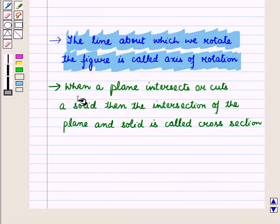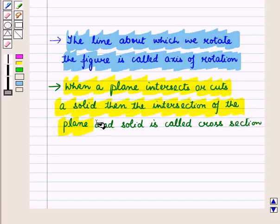And the second result is: when a plane intersects or cuts a solid, then the intersection of the plane and solid is called a cross section.